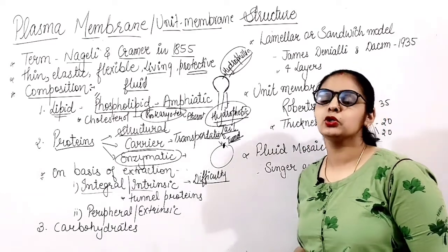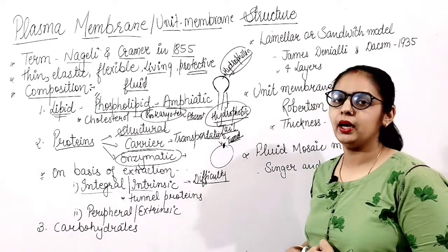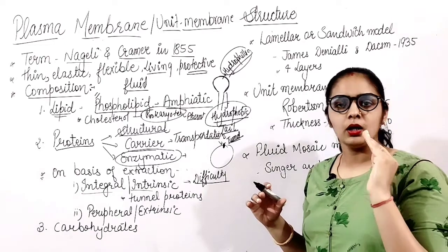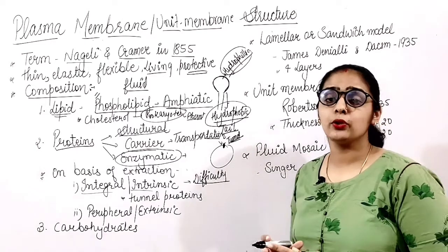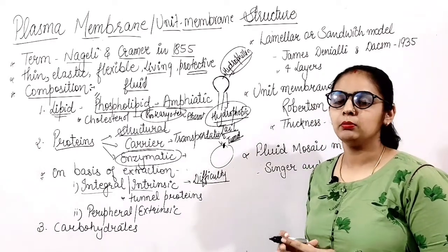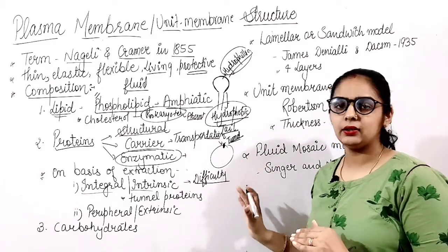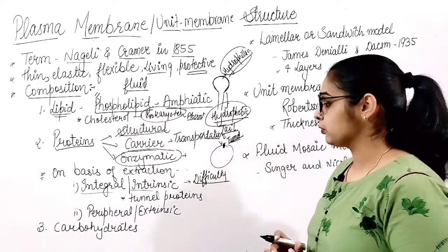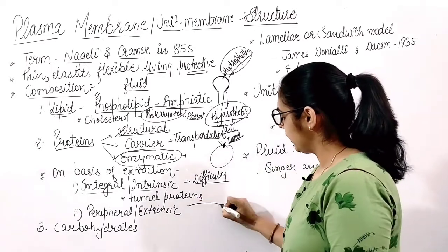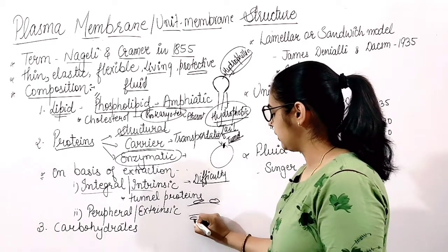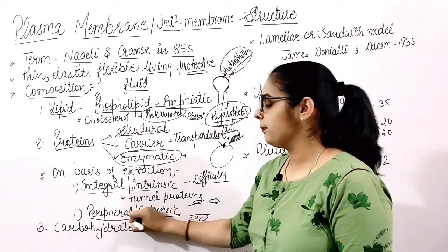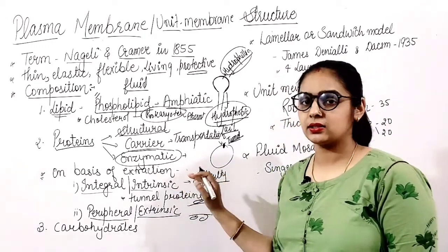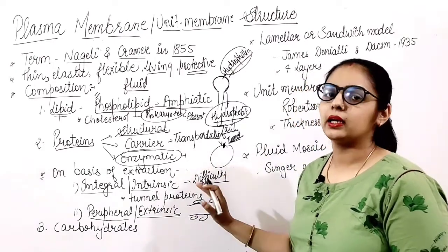Proteins that are present on the outer or inner surface of the plasma membrane and can be easily extracted are called extrinsic or peripheral proteins. So integral proteins are difficult to extract, while peripheral proteins can be easily extracted.